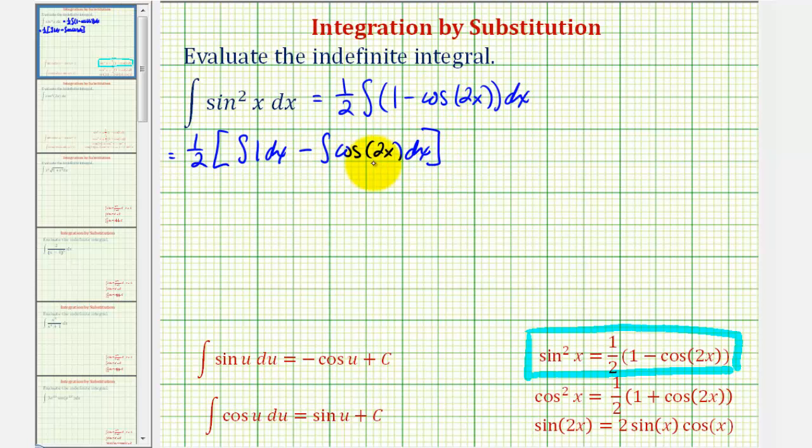And again looking at the second integral we would perform a u substitution where u is equal to two x and therefore differential u is equal to two dx. If we divide both sides by two we can see that one half du is equal to dx.